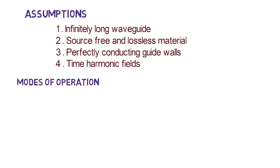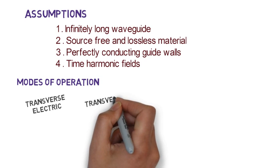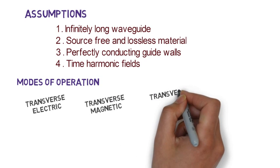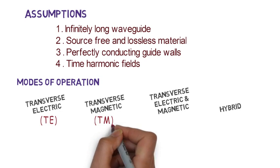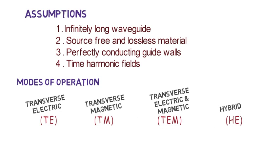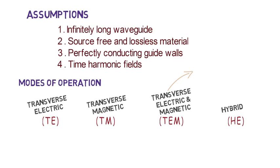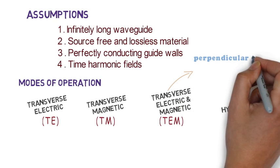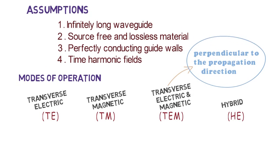A waveguide basically operates in four different modes which are transverse electric mode, transverse magnetic mode, transverse electric and magnetic mode and the hybrid mode. In short these modes are represented by TE, TM, TEM and HE respectively. Here the word transverse means field is perpendicular to the propagation direction and is zero along the direction of propagation.